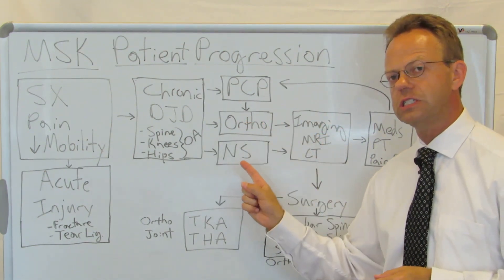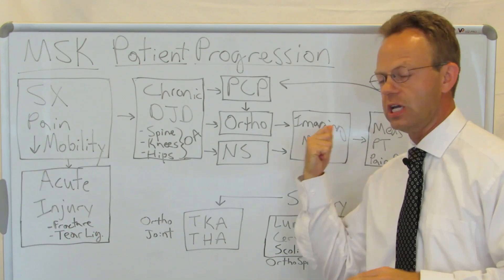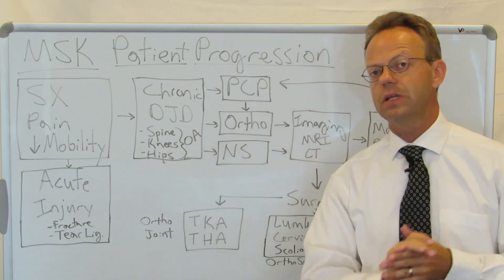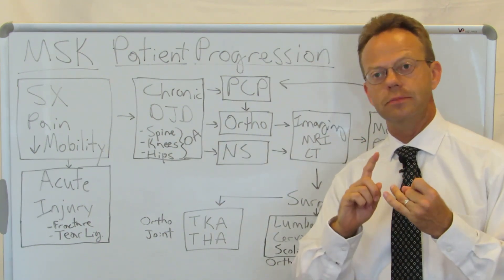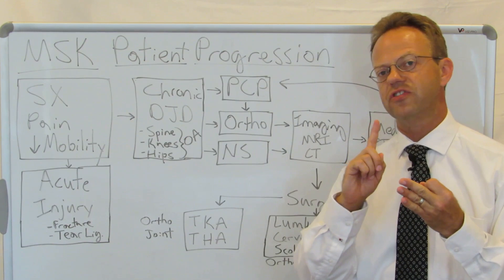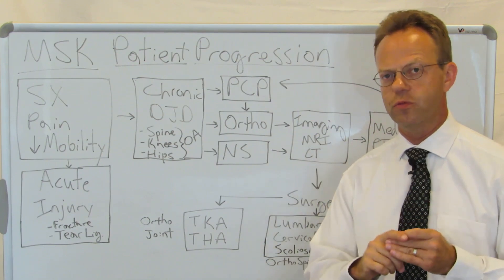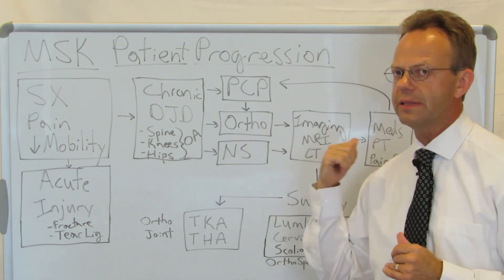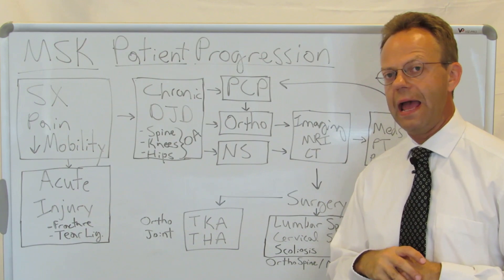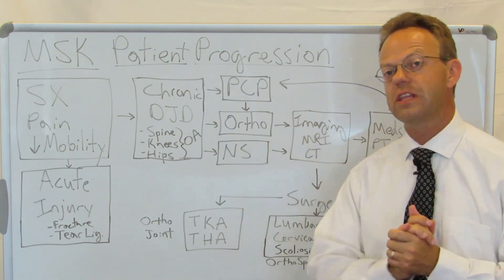When that orthopedist or neurosurgeon does the initial evaluation, almost by default they are going to order imaging in the form of either an MRI or CT scan. The most common ones — there are really only four: MRI without contrast for the lower extremity, MRI of the lumbar spine without IV contrast, MRI of the cervical spine without contrast, and if evaluating scoliosis, the thoracic spine as well. Plain x-rays are also used but are typically inexpensive — around $150 to $250 — whereas advanced imaging like MRIs and CTs can run $1,500, $2,000, or $3,000.